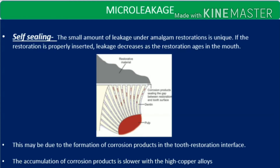Amalgam has a very good property of self-sealing. The small amount of leakage which occurs under an amalgam restoration is quite unique. If the restoration is properly inserted and properly condensed, leakage is going to decrease as the restoration ages in the mouth. Because of the formation of corrosion products at the tooth-restoration interface, these corrosion products seal the interface and reduce leakage over time. Both high copper and low copper amalgams are capable of sealing against micro leakage, but accumulation of corrosion products is slower with high copper alloys because the gamma 2 phase — the main corrosion phase — is eliminated in high copper alloys.